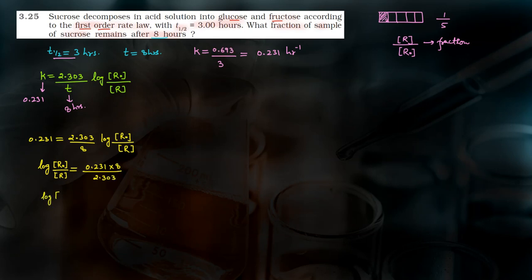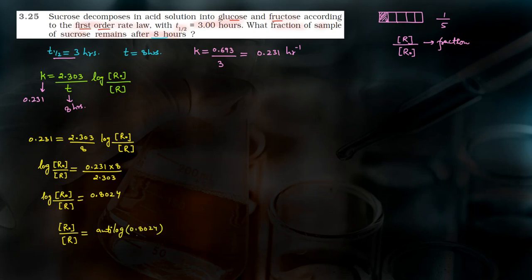जब इसको solve करेंगे तो log([R]₀/[R]) equals to 0.8024 आएगा। अब ये log की value आई, तो [R]₀/[R] के लिए इसका antilog लेना पड़ेगा। [R]₀/[R] equals to antilog of 0.8024, जो equals to 6.345 आएगा।